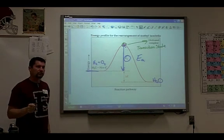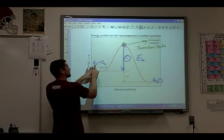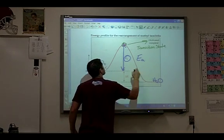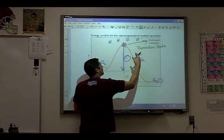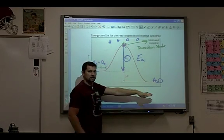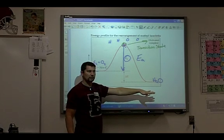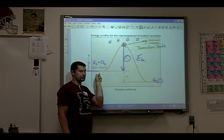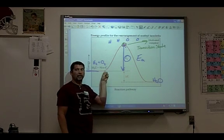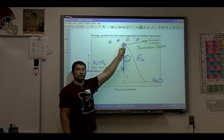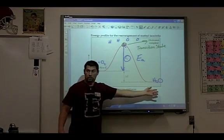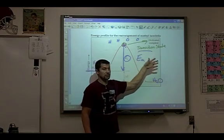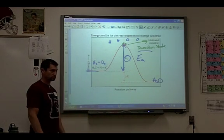That is the point where these molecules right here separate and then rearrange themselves into the new product. Does that make sense? So you're starting over here with hydrogen bonded to hydrogen, oxygen bonded to oxygen. And then up here is where the bonds are broken and they start rearranging to form water. So that's why we kind of call it the transition state there.